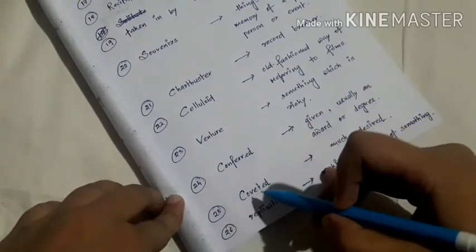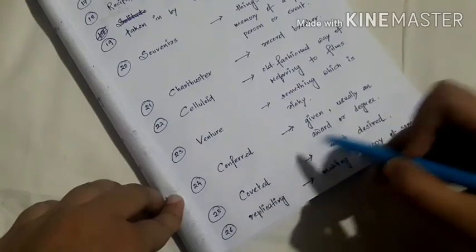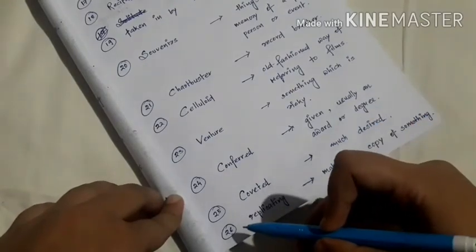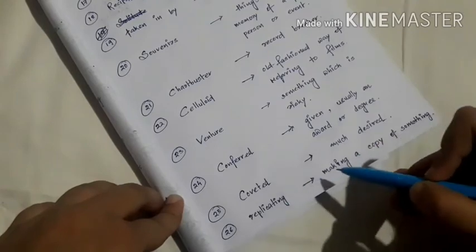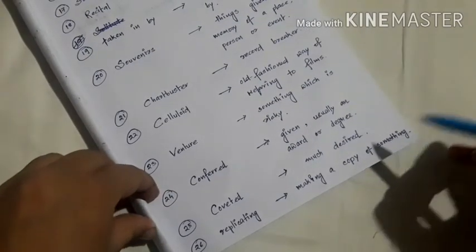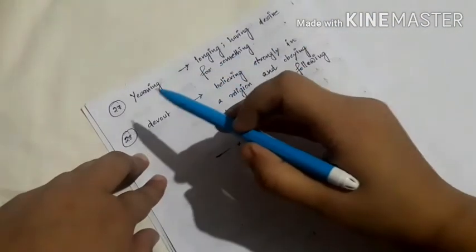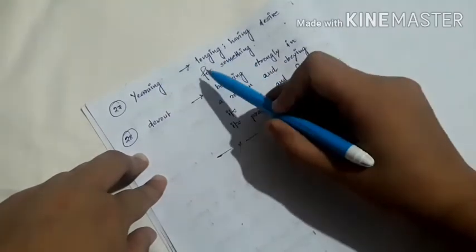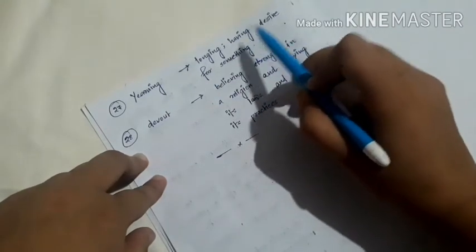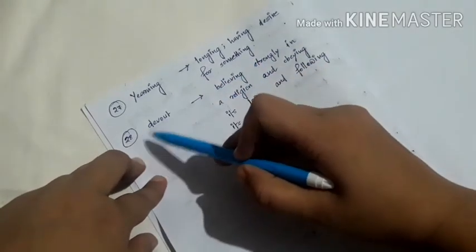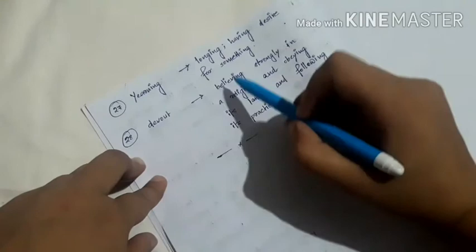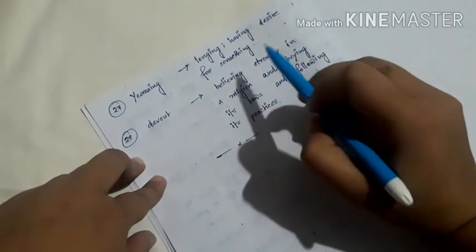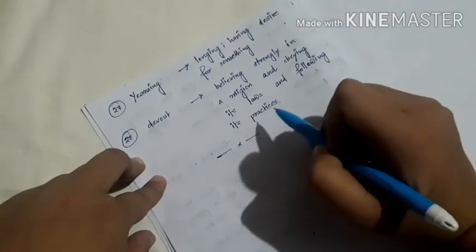Number twenty-five, coveted, meaning much desired. Number twenty-six, replicating, meaning making a copy of something. Number twenty-seven, yearning, meaning longing or having desire for something. Number twenty-eight, devout, meaning believing strongly in a religion and obeying its laws and following its practices. These are the word meanings of part two of the chapter the sound of music.